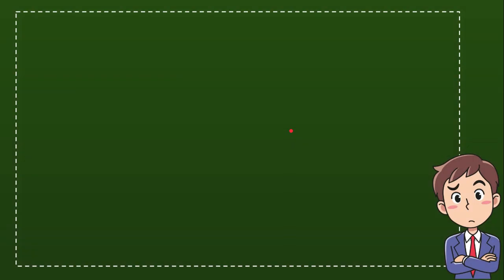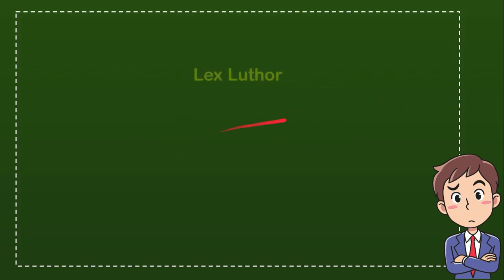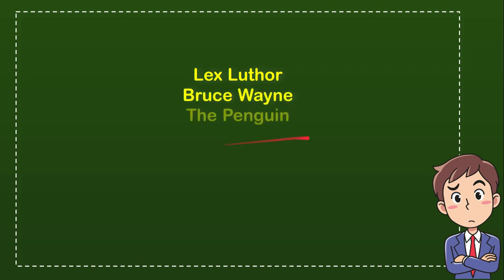Now I will give you four options and you try to guess which one from these four options that you think is the correct answer for the question. Here is the list of the options: the first option is Lex Luthor, second option is Bruce Wayne, third option is Deb Penguin, and the last option is Harvey Dane. So from these four options, what do you think?